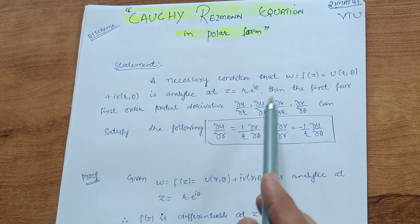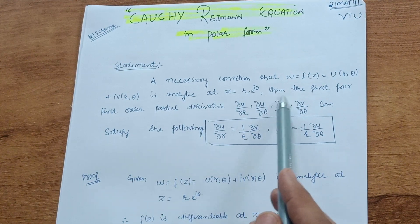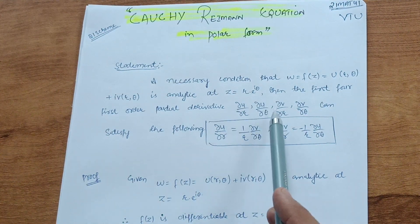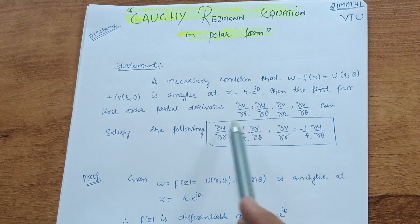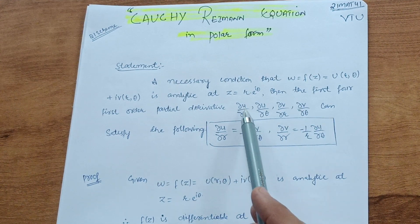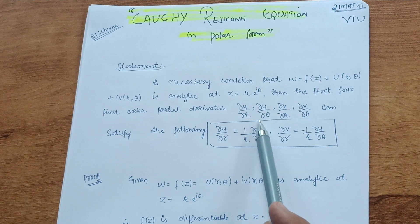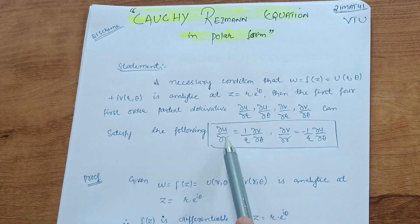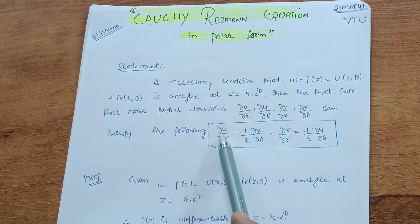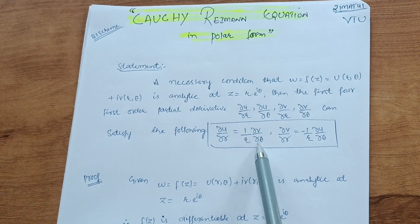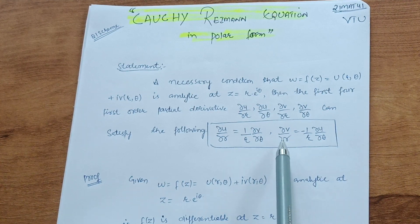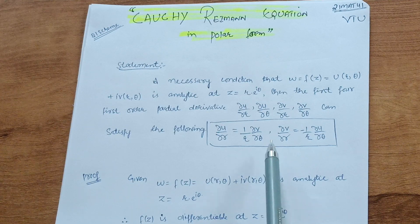The first-order partial derivatives ∂u/∂r, ∂u/∂θ, ∂v/∂r, ∂v/∂θ must satisfy the following: ∂u/∂r = (1/r)·∂v/∂θ, and ∂v/∂r = −(1/r)·∂u/∂θ. This is the statement you need to prove. Let me start its proof.